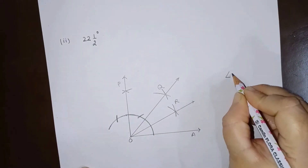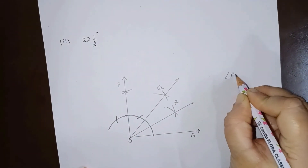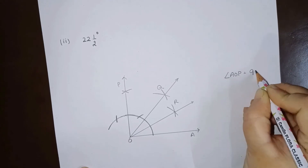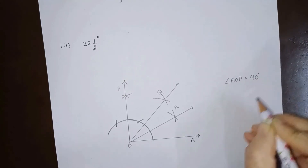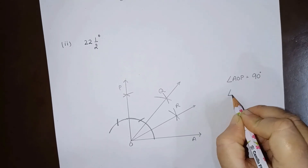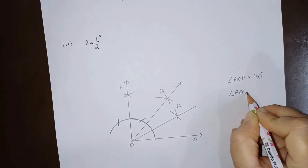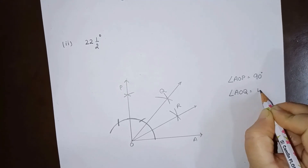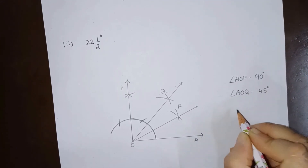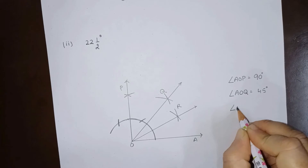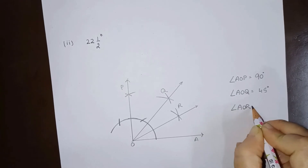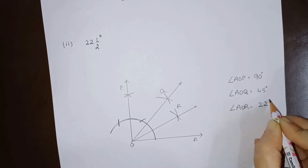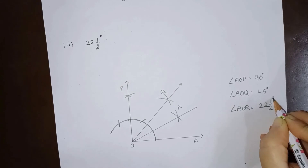Angle AOP is 90 degrees, angle AOQ is 45 degrees, and angle AOR is 22 and a half degrees.